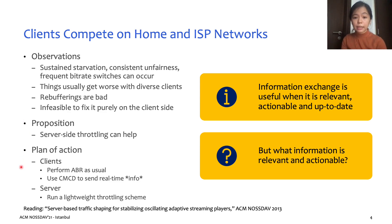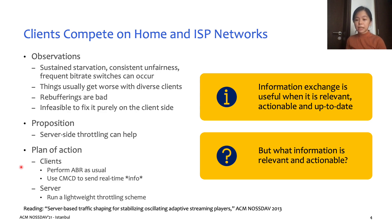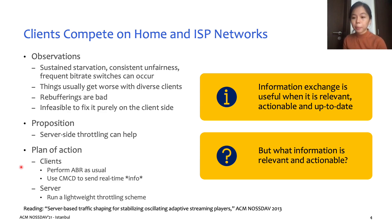For example, the client can use CMCD to send relevant information to the server in real-time, then the server could run a lightweight throttling scheme to alter the downstream bandwidth allocated to the client according to the parameters it received. Server-side throttling or server-side bandwidth allocation could potentially have a great impact on our target scenario because in a typical HTTP streaming application, the clients do not directly communicate with each other and do not know the status of other clients, but the server can, since the server communicates with every client. With this big-picture view, the server can potentially help allocate resources more efficiently across all competing clients in the link.